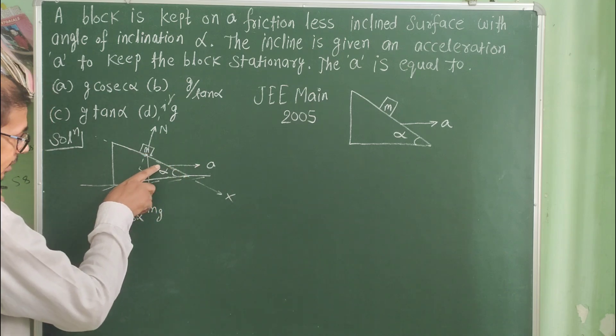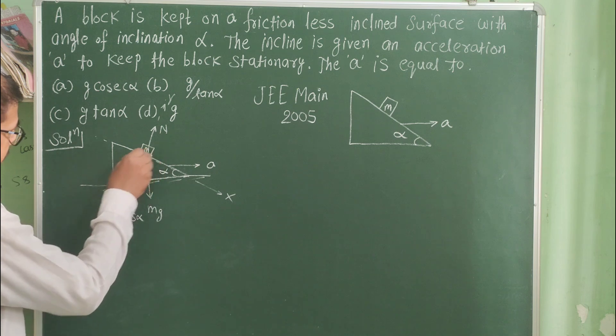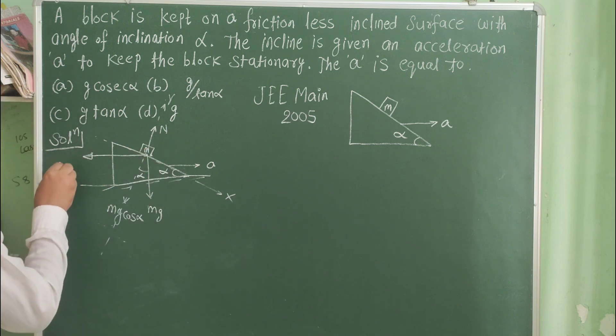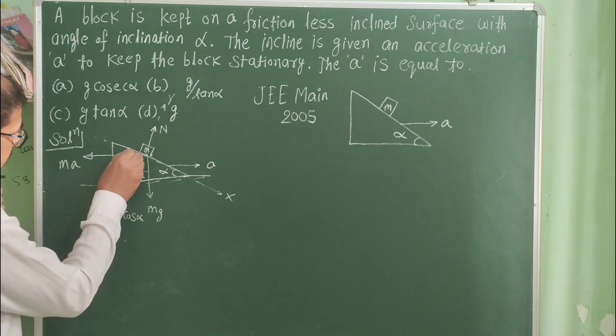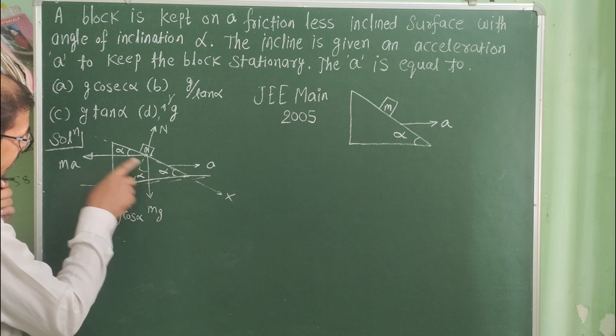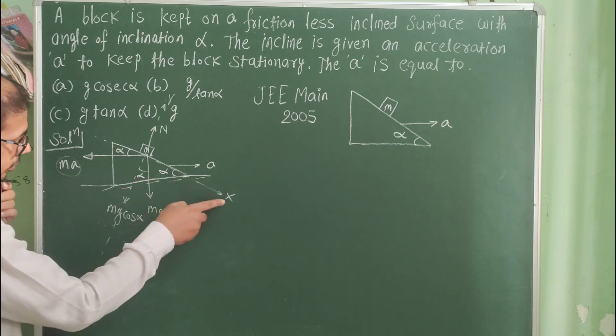Now, the inclined plane accelerates towards the right, so there is a pseudo force on the block towards the left. This is ma. This is the concept of pseudo force. This is alpha. Now break the component ma according to x and y.